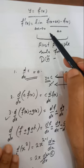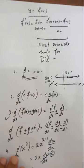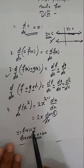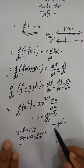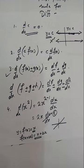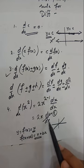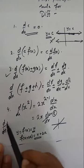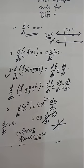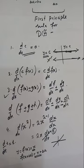The derivative of a linear function y equal to x using the first principle rule gives one. So dx/dx will always be one. If you have d/dt of t, that is also equal to one — meaning if you differentiate a variable with respect to the same variable, you get one. This was our previous discussion.